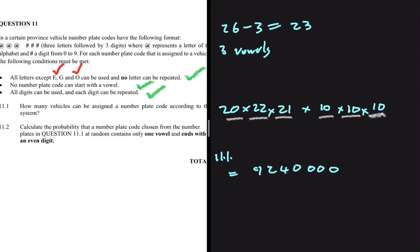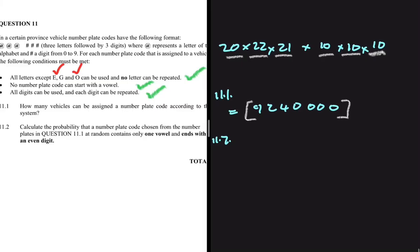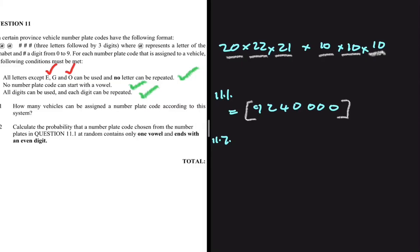Before we do 11.2, I want to make sure you understand what this 9,240,000 means. This 9,240,000 is our sample space. When we calculate the probability of any other arrangement, we will divide by this 9,240,000 — it is our sample space.